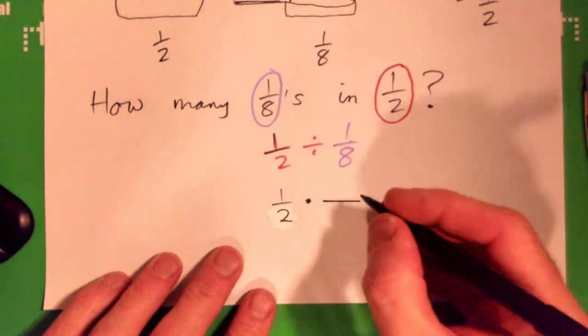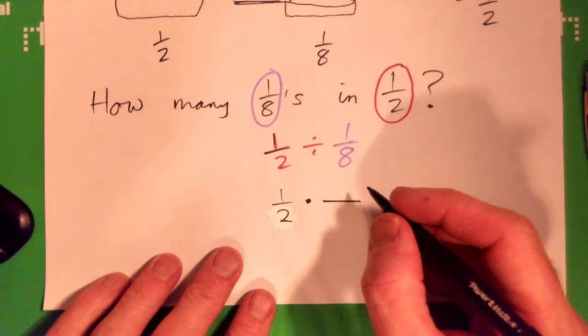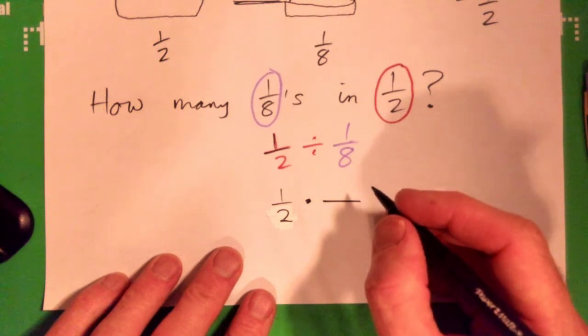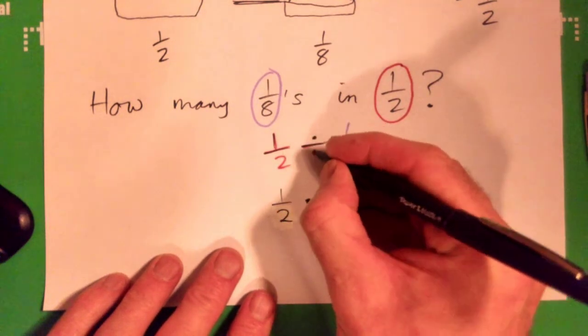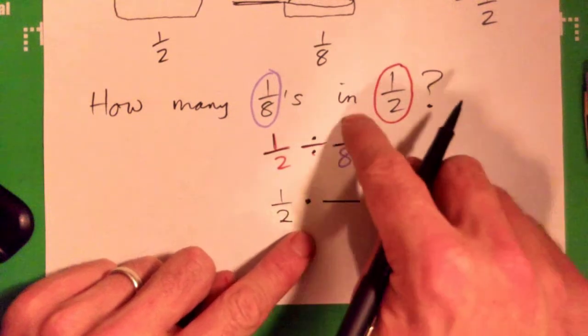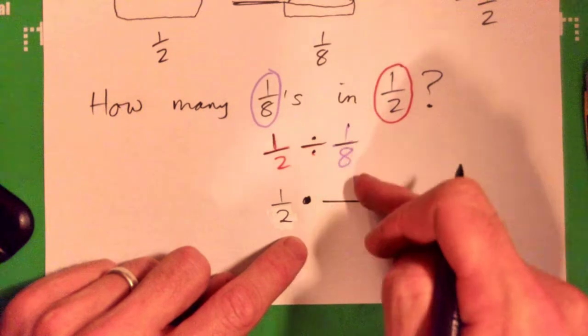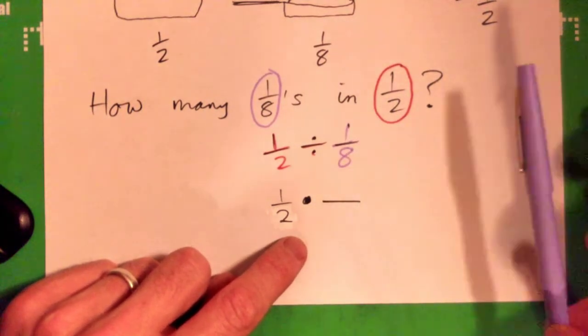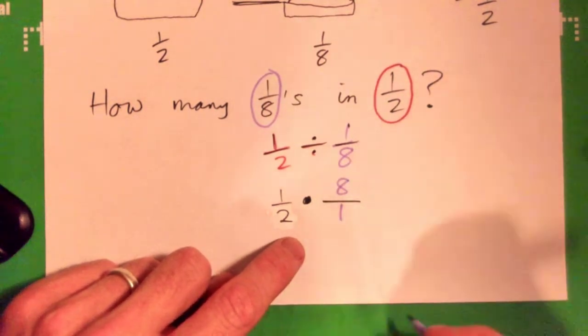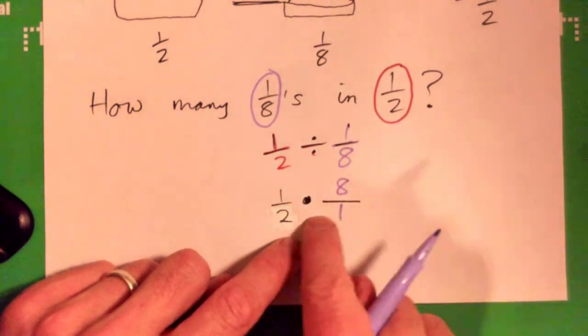When you divide by a fraction, you flip this one on the right. You multiply by the reciprocal. You multiply by this one flipped upside down. That one gets flipped upside down. See that? Always, when you divide by a fraction, it gets flipped upside down and multiplied, right?